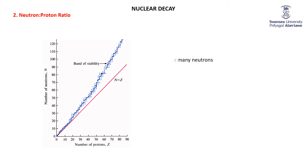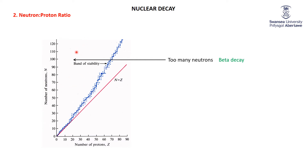If an isotope is over on this side of the band of stability, it's got too many neutrons. If it's got too many neutrons, it would like to reduce the number of neutrons or increase the number of protons, or maybe do both. What do we know that turns a neutron into a proton? Beta decay. So isotopes that are up here on this side of the band of stability will typically decay by beta decay, turning some of those excess neutrons into protons.